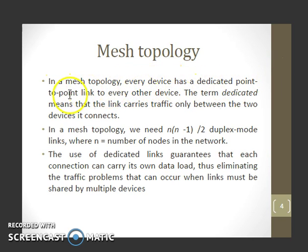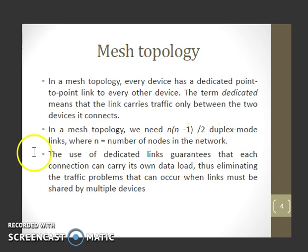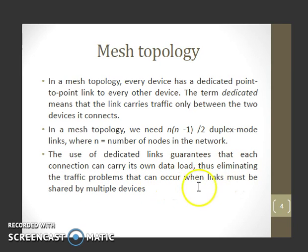In mesh topology, every device has a dedicated point-to-point link to every other device. The term dedicated means that the link carries traffic only between the two devices it connects. In a mesh topology, we need n(n-1)/2 duplex-mode links, where n is equal to the number of nodes. The use of dedicated links guarantees that each connection can carry its own load, thus eliminating traffic problems that can occur when a link must be shared by multiple devices.